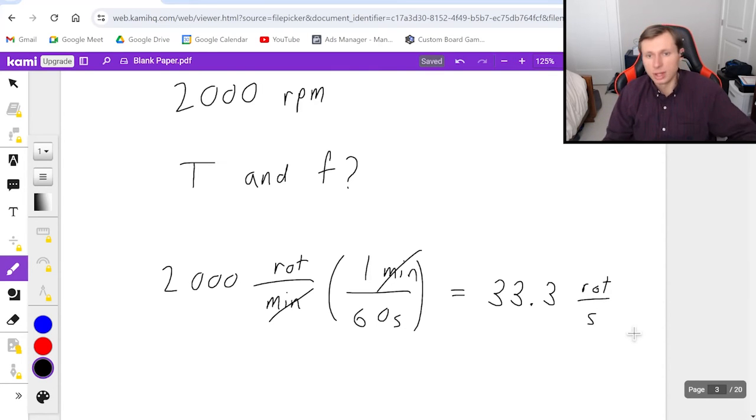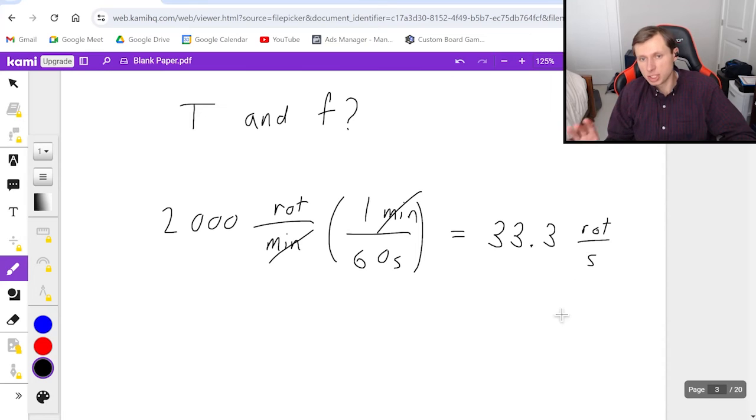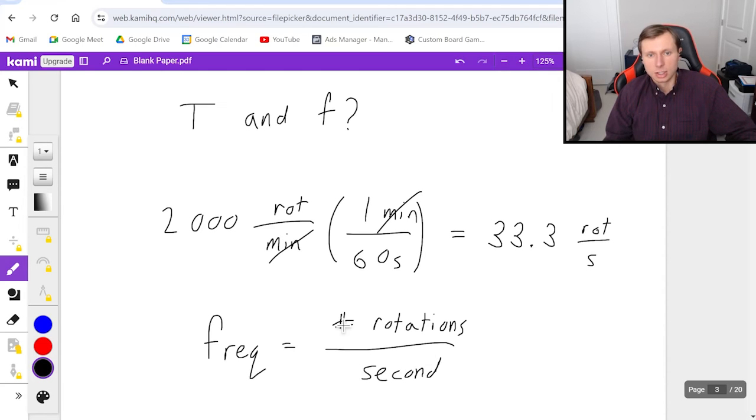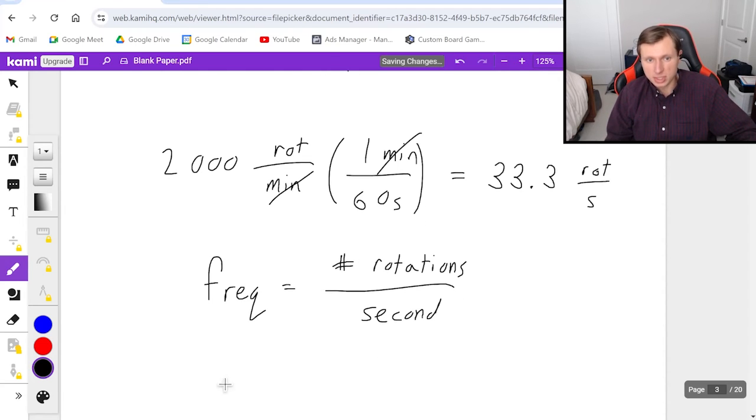Now, maybe you're stuck here. Well, let me tell you, rotations per second, that's the same thing as a frequency. Remember, frequency is the number of oscillations or rotations, basically the same word, per second. So in other words, you have the frequency, F equals 33.3, we have it. And we can say the units are Hertz, and we're done.